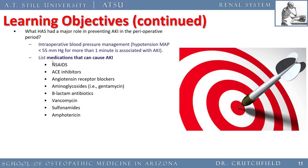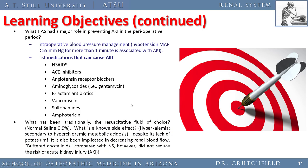The most common nephrotoxic medications are over-the-counter pain medications like Motrin. The traditionally used resuscitation fluid has been normal saline, but recent studies show that too much normal saline results in a hyperkalemic, hyperchloremic metabolic acidosis despite its lack of potassium, and it has been implicated in decreasing renal blood flow. Buffered crystalloids with bicarb were tried but didn't reduce the risk of acute kidney injury. There is no perfect solution to prevent AKI.